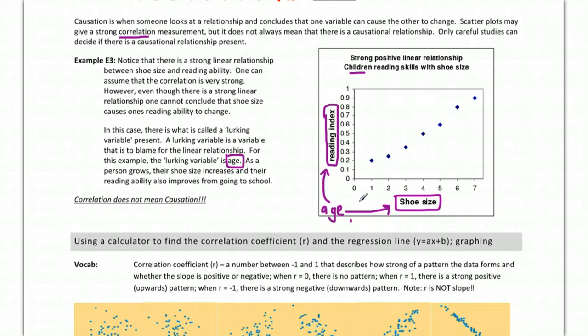So many times in relationships like this, there's something behind the scenes that's causing both the X and the Y. So correlation, just because there's a strong pattern, doesn't mean that X causes Y, doesn't mean that there is causation present.